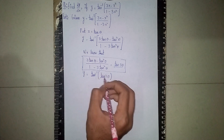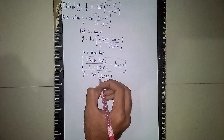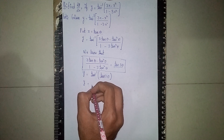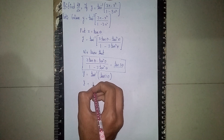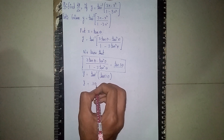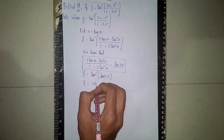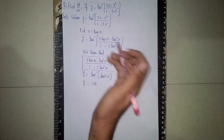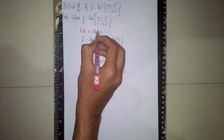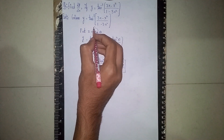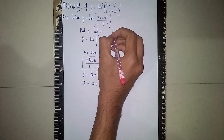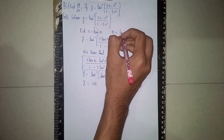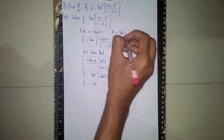Here, tan inverse and tan get cancelled. What is remaining? Y is equal to 3 theta. Now I need the theta value. I have taken x is equal to tan theta, so sending tan to the other side gives theta is equal to tan inverse of x.